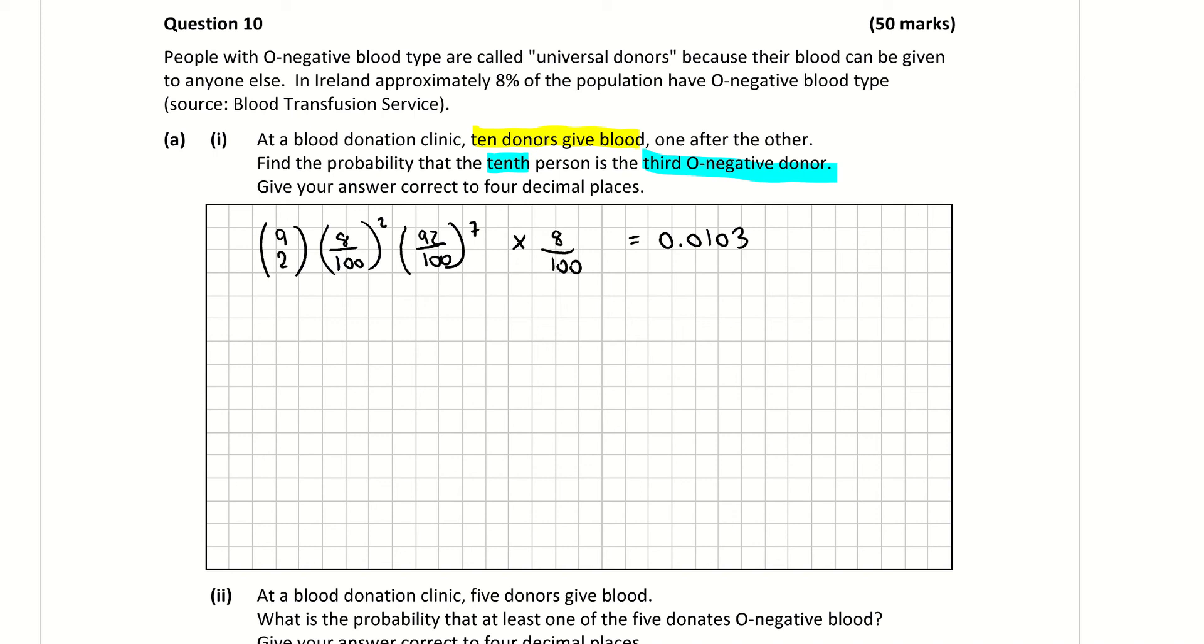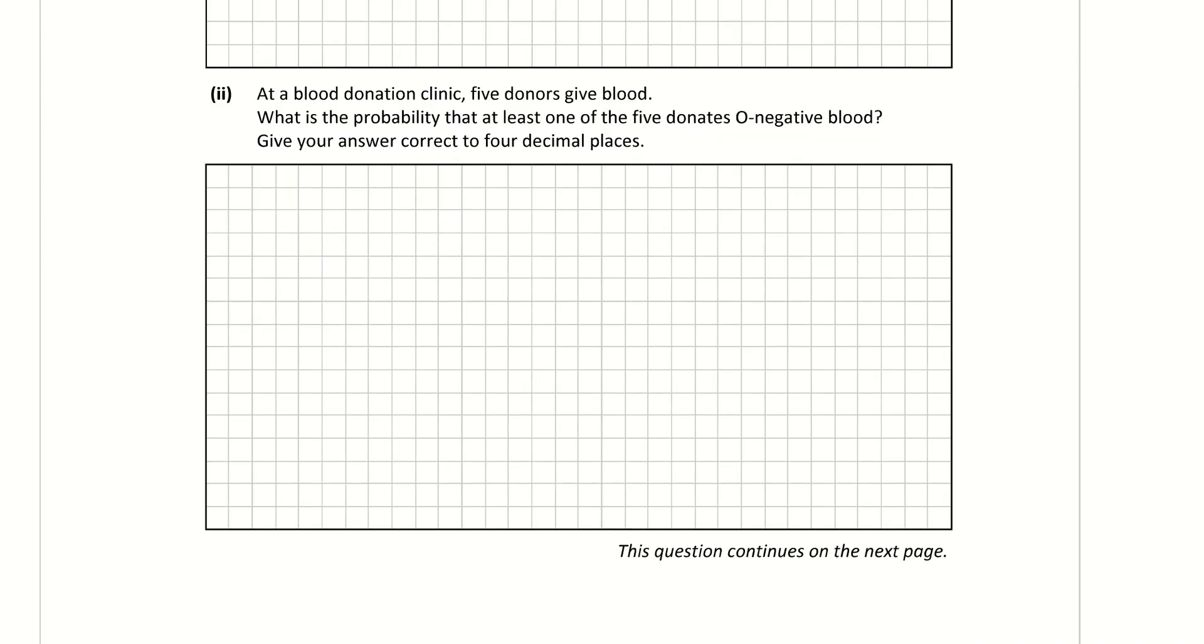Looking at part 2 to that question, at a blood donation clinic, 5 donors give blood. What is the probability that at least one of the 5 donors donates O negative blood? So the key there is the at least phrase. Now we could go through each of these separately. We could find the probability of 1 or the probability of 2 or the probability of 3 or the probability of 4 and add them together.